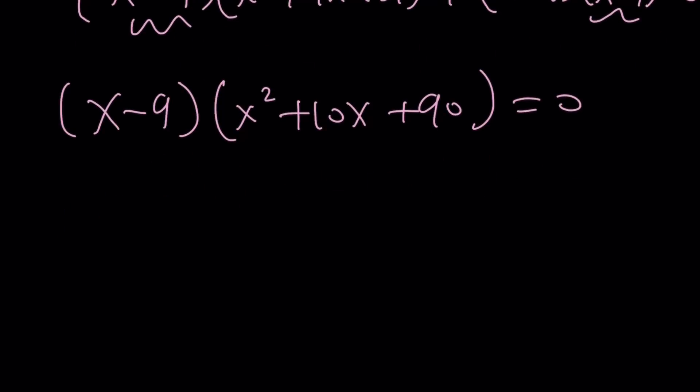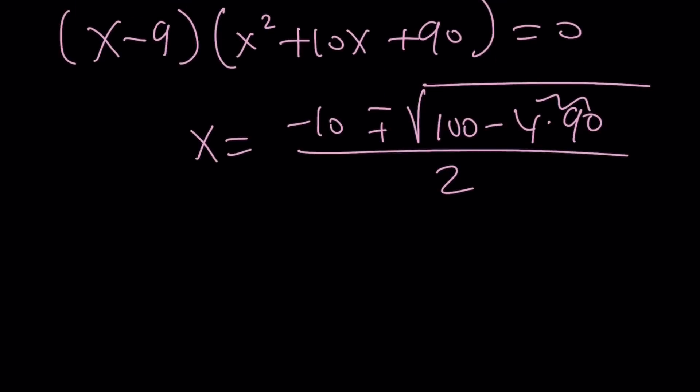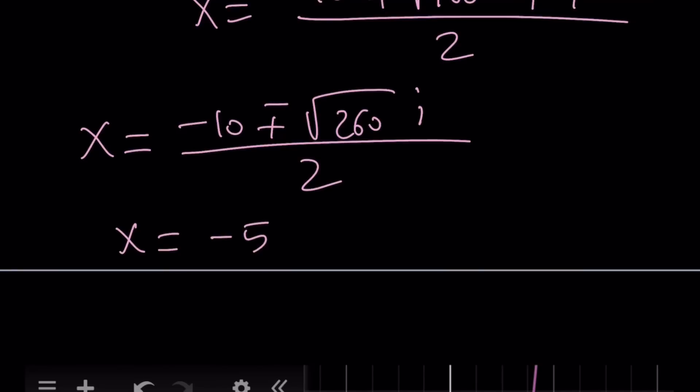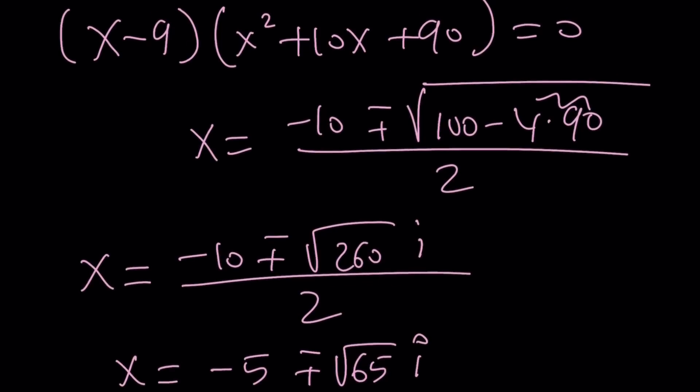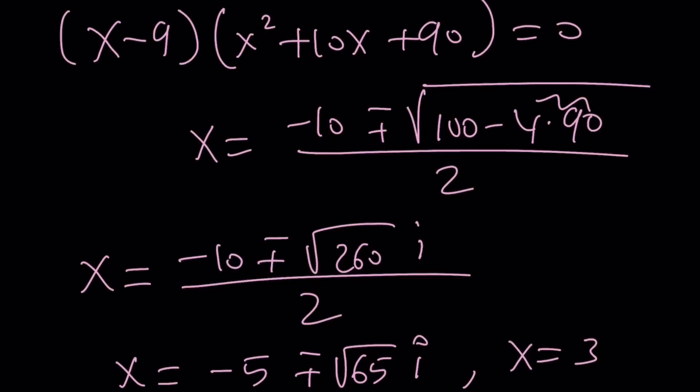x equals 9 is well known. The other solutions are going to be coming from the quadratic formula: negative 10 plus minus the square root of b squared minus 4 times 90. Uh-oh, that's not going to be good because they're going to be complex - this is 360, so the difference is negative 260. I can write it as plus minus the square root of 260i divided by 2. After simplifying, you're going to get negative 5 plus minus root 65i. Those are going to be the non-real complex solutions, so we got 3 solutions because this is a cubic. x equals 9.